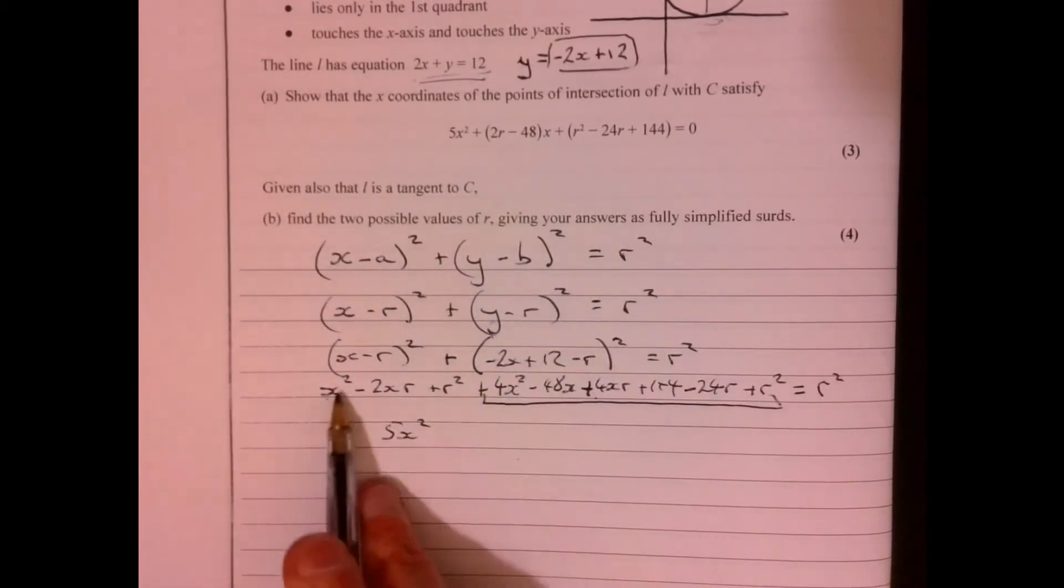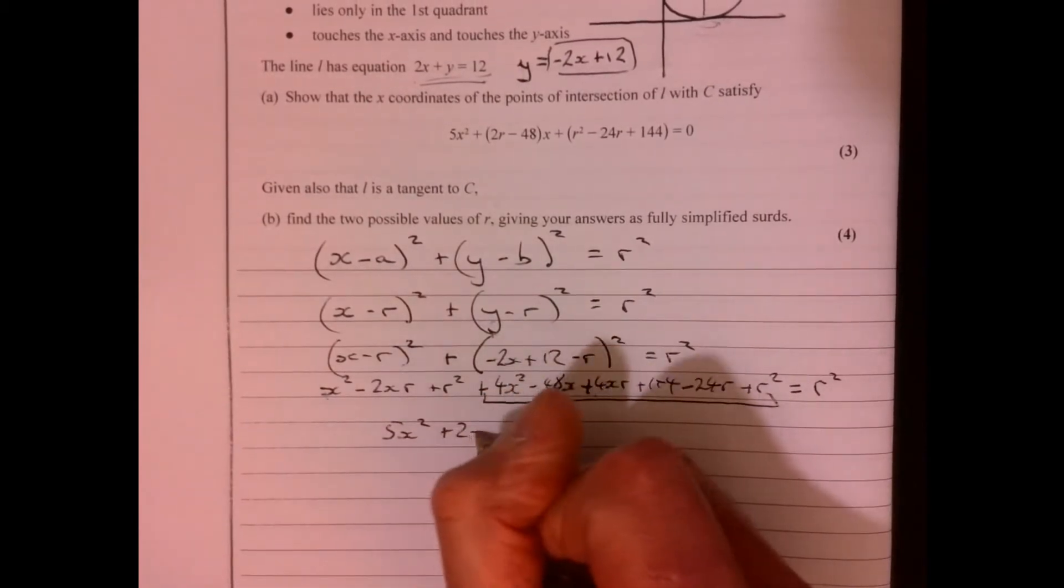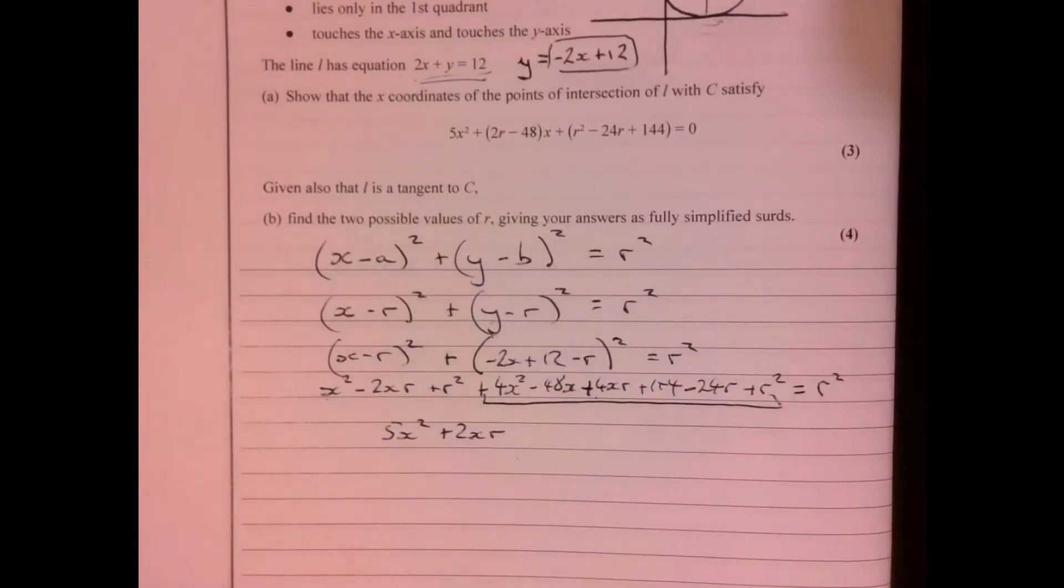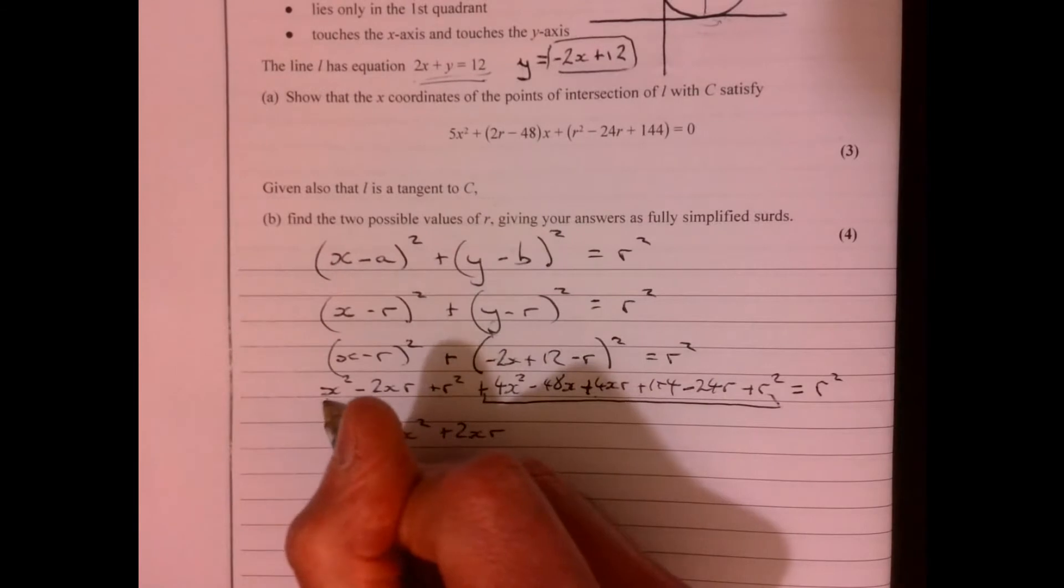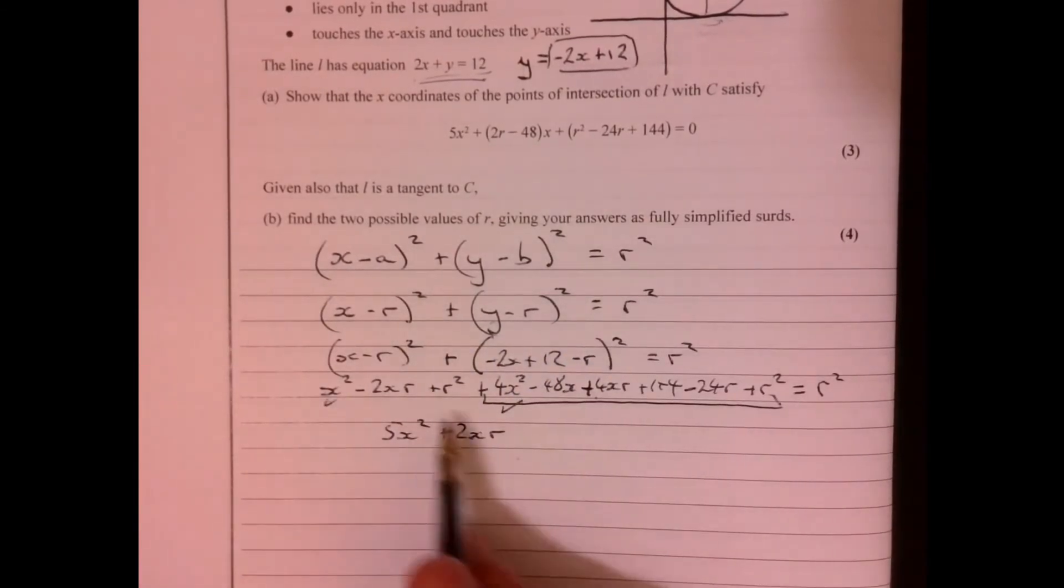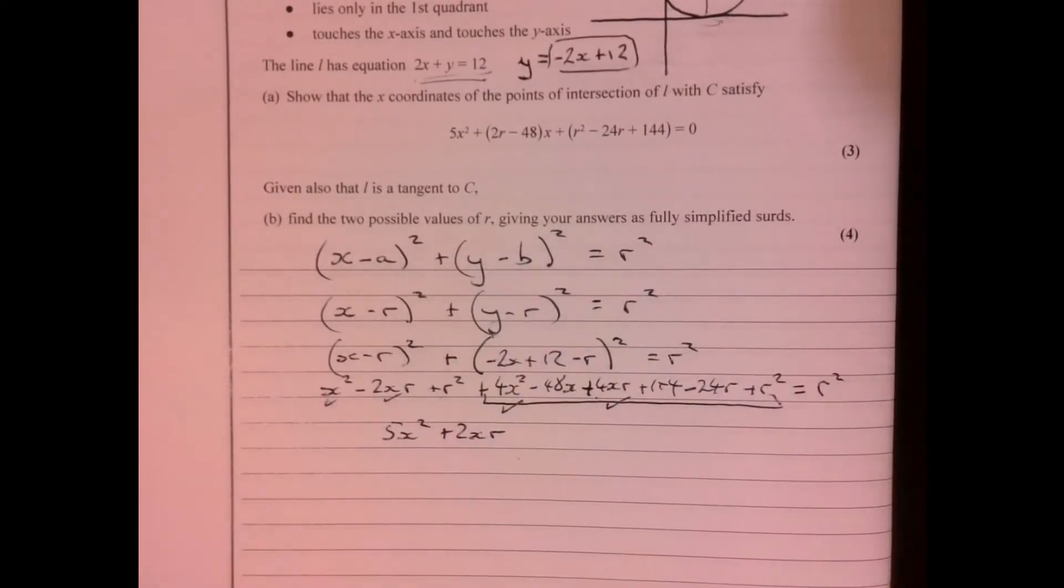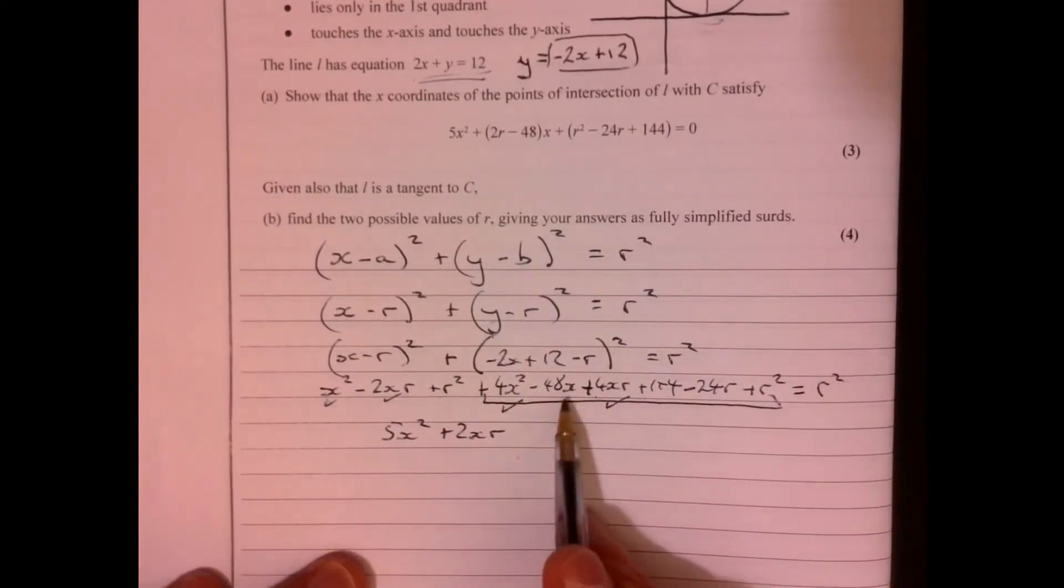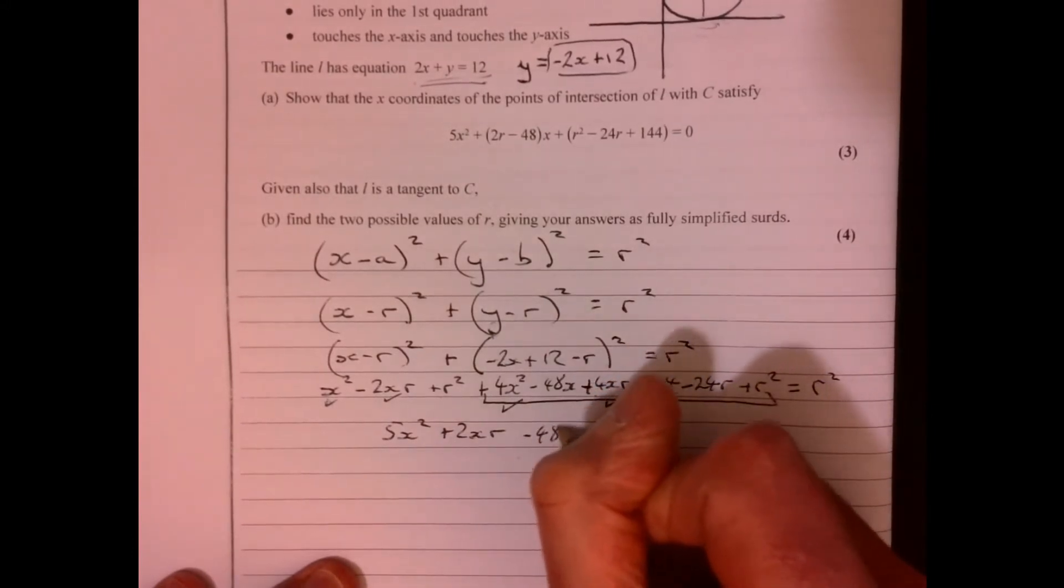Right, let's tidy it all up and see where it takes us. So we've got 5x² and then we've got plus 2xr. Then we've got r squared, so maybe you'd just like to tick them off as you go.